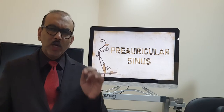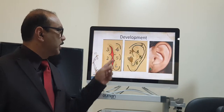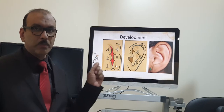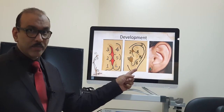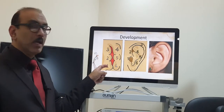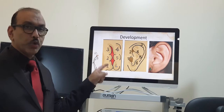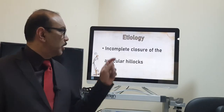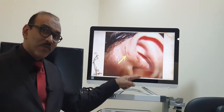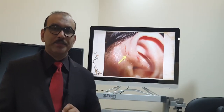Before starting this topic on auricular sinus, let me tell you about the development of the pinna — the embryology. The pinna is formed from six parts called hillocks. It differentiates and forms the pinna. If there is faulty fusion between two specific parts, a small opening forms along with a tract inside, seen in the anterior part. This is called preauricular sinus.